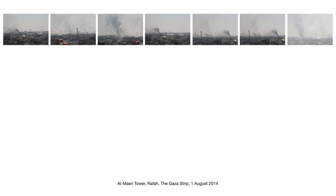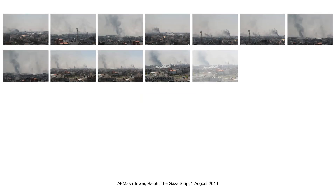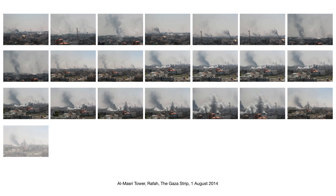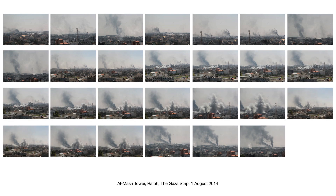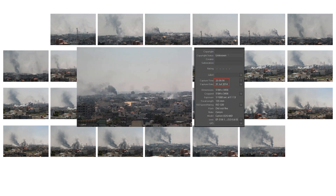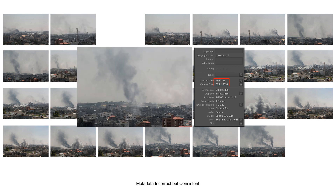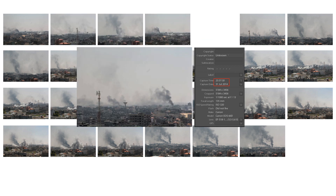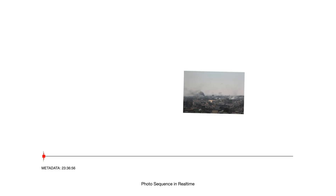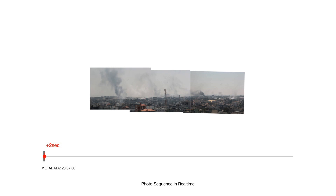Often the metadata on photographs we have access to is missing or set wrong, and we have to find other means to time the images. In this case, the metadata shows the photographs were taken shortly before midnight, which is unlikely. Although the metadata is wrong, the time gaps between the photographs are consistent throughout the sequence. The photographer took a photograph and two seconds later another photograph.